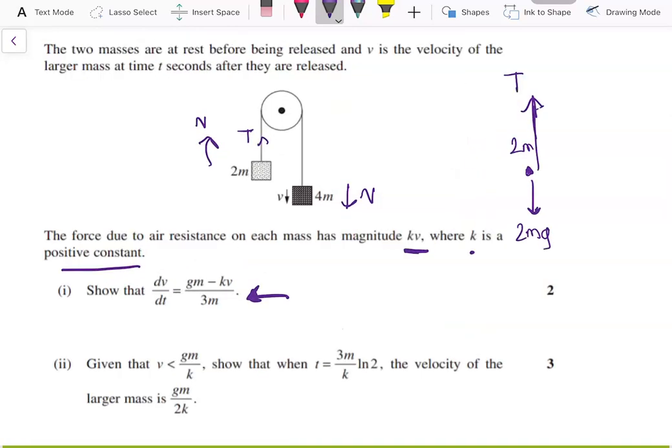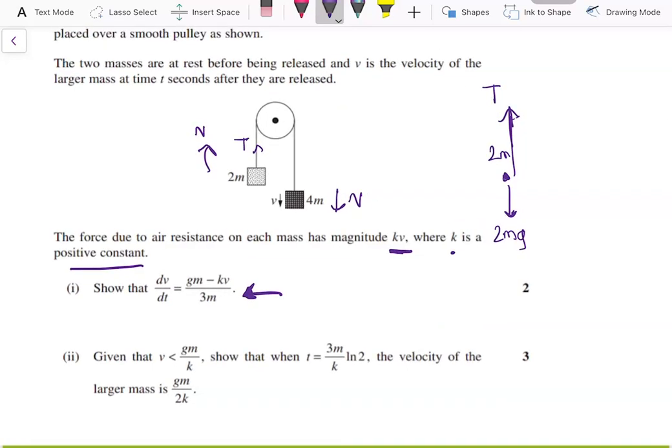And also, since the 4m mass is larger, the system is going to move downwards like this. So since the object moves upwards, the air resistance will be downwards. So the air resistance is going to be kv downwards.